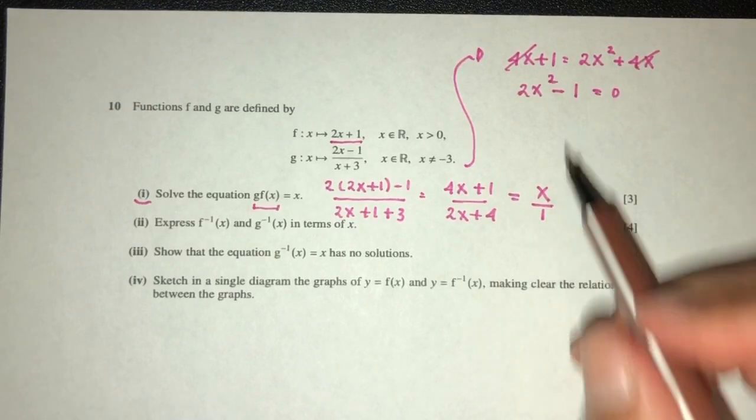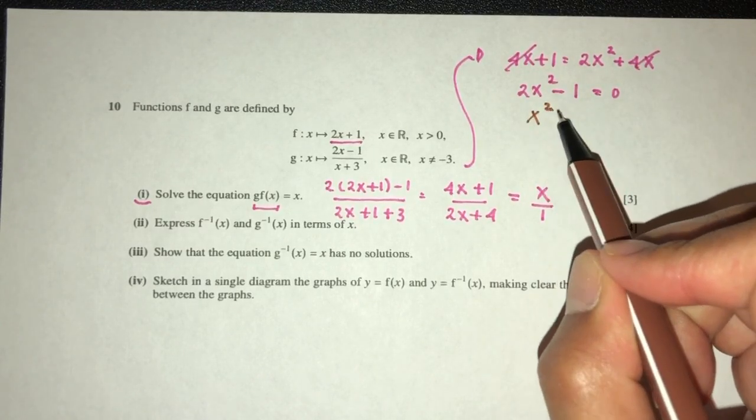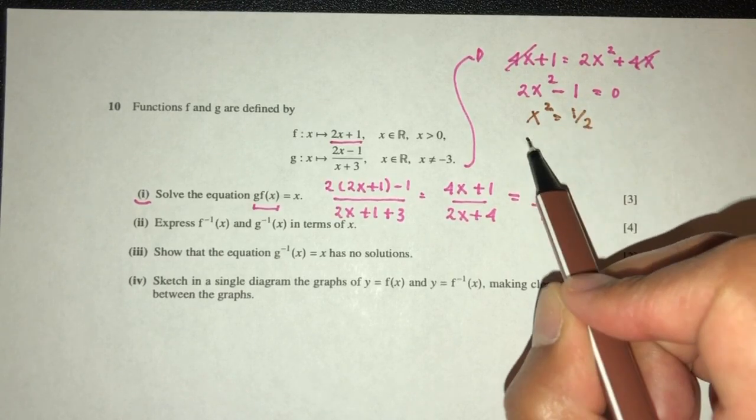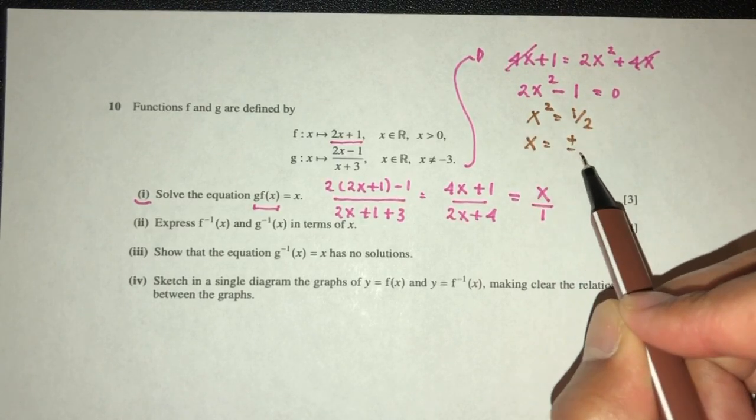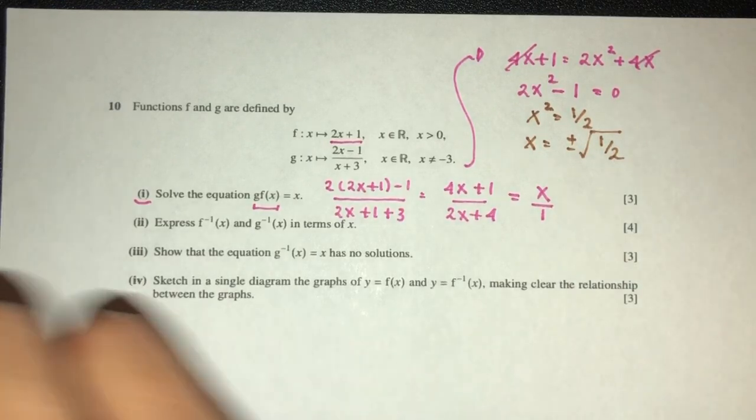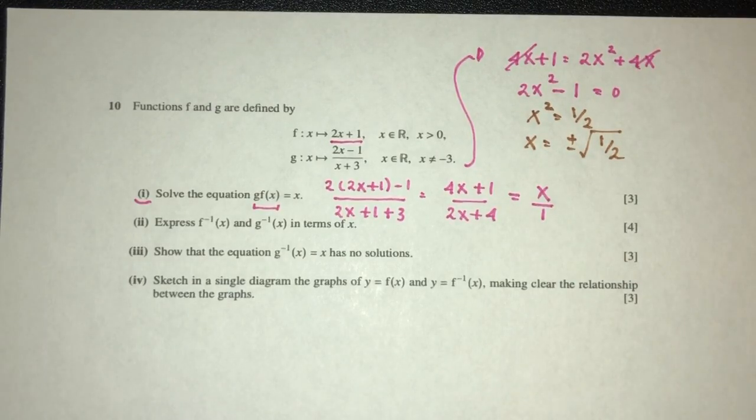And what else do we need to do? Now we have to solve x squared, that will be 1 over 2, so x will be plus minus 1 over root 2. Okay, that will be part one of your question.